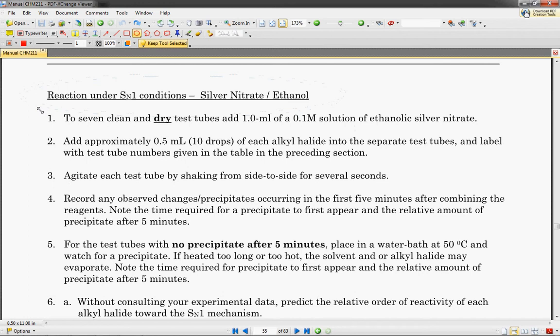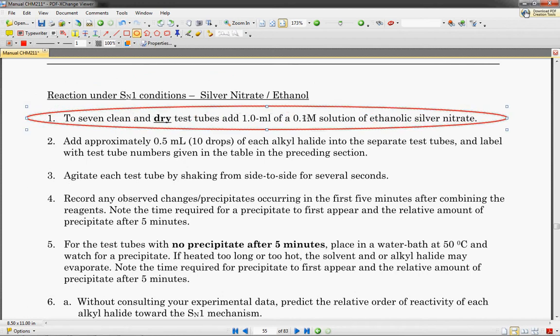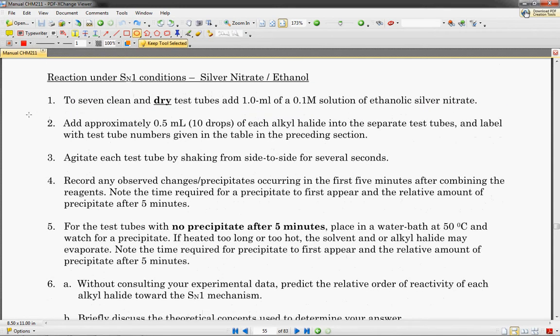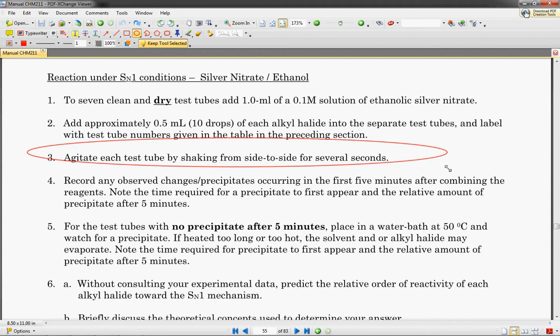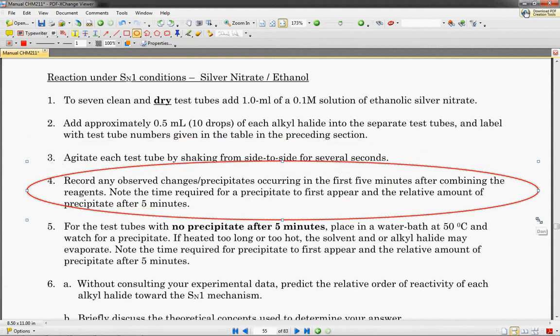These halogens are going to be mixed under certain conditions. In the first part of the experiment, you're going to mix them with silver nitrate. You're going to have seven clean, dry test tubes, and you're going to add one mL of a 0.1 molar solution of ethanolic silver nitrate.